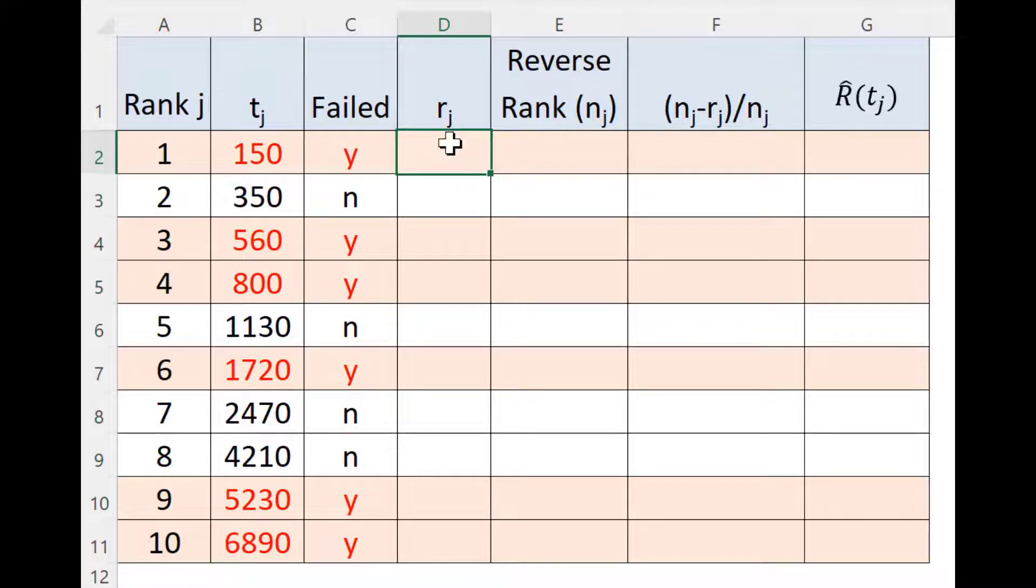Now, the components which have failed, we will put one because each row represents only one component and wherever there is no failure, we will put a 0.